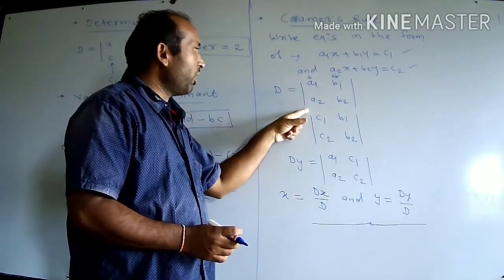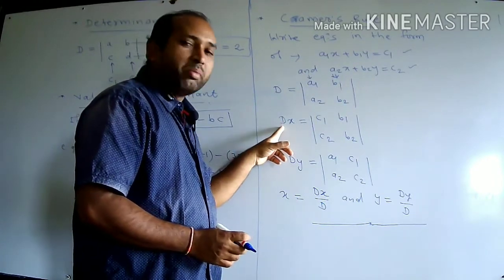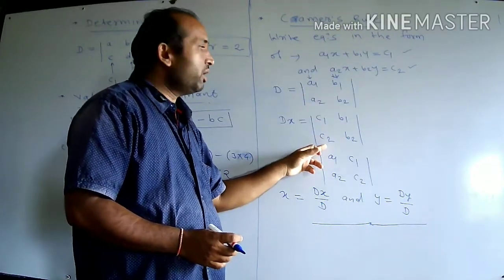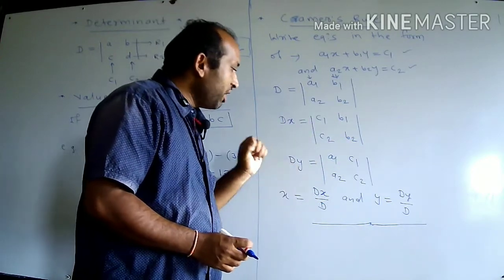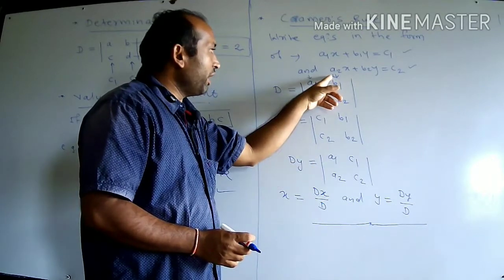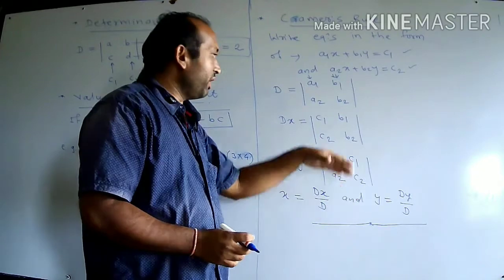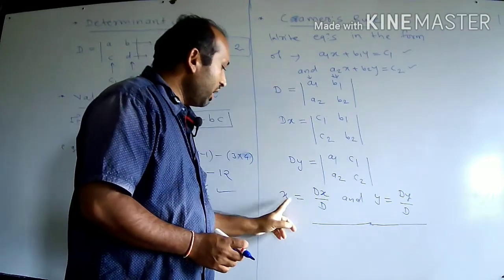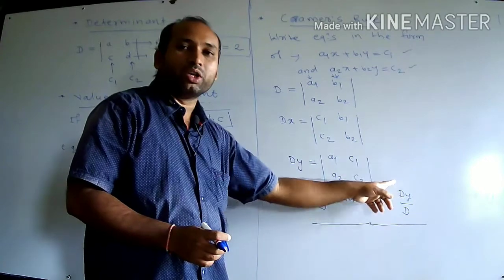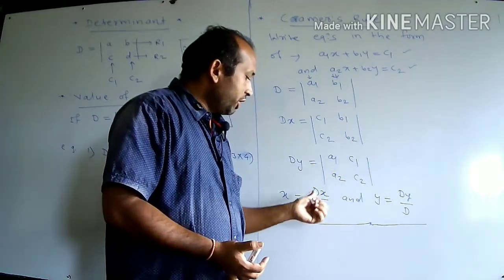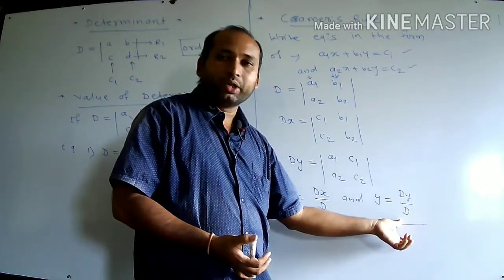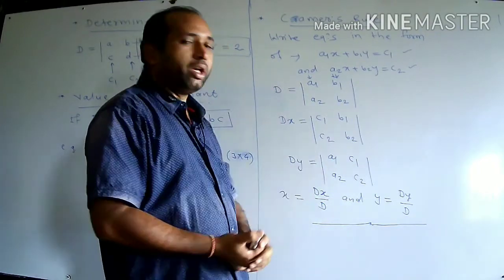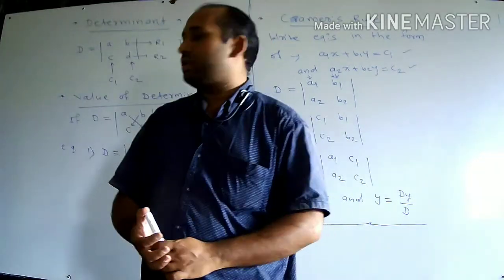In D, take coefficients of X in the first column, coefficients of Y in the second column. In DX, replace the coefficients of X by the right-side constants C1, C2, keeping Y coefficients as is. In DY, replace the coefficients of Y by constants C1, C2, keeping the first column as is. Find all three determinant values, then apply X = DX/D and Y = DY/D to solve the simultaneous equation.